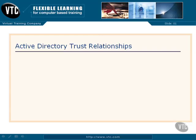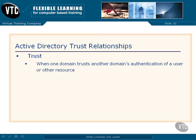Now let's tackle the concept of trust relationships. On the 70-640 exam, you can expect to see a number of questions regarding trust relationships. Let's start off with a simple definition. A trust is generally between two domains, and a trust is created when one domain needs to cross that boundary into another domain's space to get a resource. Let me just draw this out.